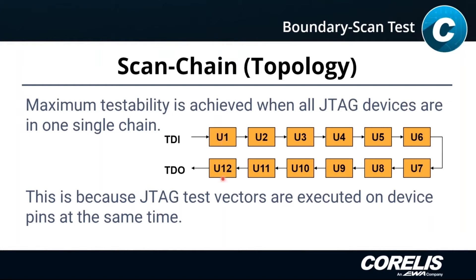For example, if U1 and U12 have interconnects, we want to be able to tell U1 as a device to drive a signal, and U12 as a device to receive that signal and confirm that it received the expected signal. If we can't do that, then we can't get full testability.